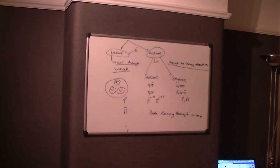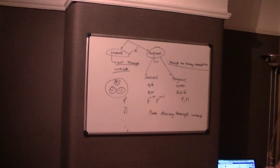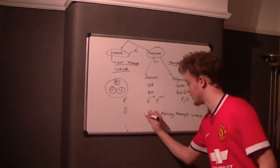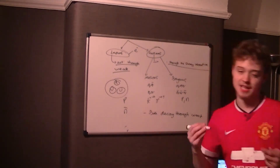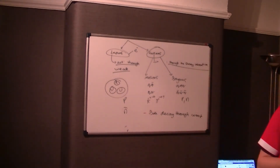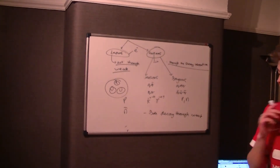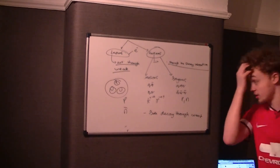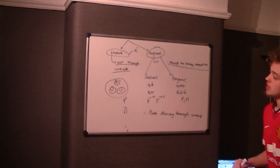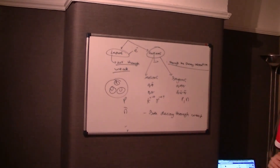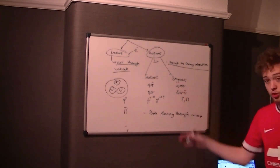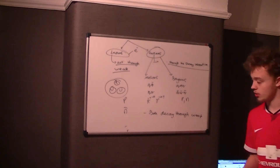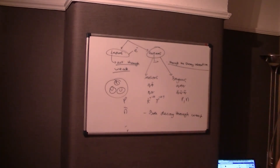Whenever you see a decay, it's always a weak interaction — that was covered in the last question. The mark scheme specifically wants you to state the quark structure. So for six marks, you need to talk about the quark structures and that both particle types decay through the weak interaction.